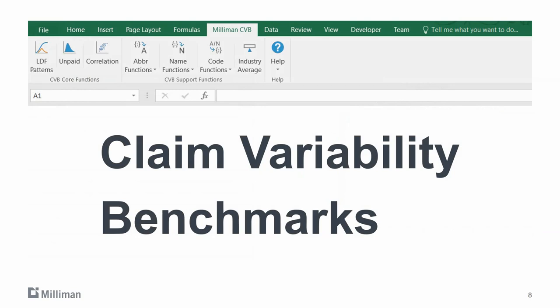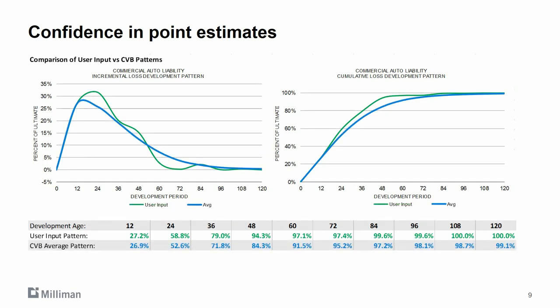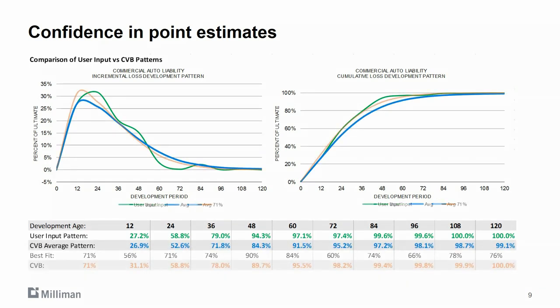To answer the second question about how it can benefit a user, it actually has multiple parts. Starting with loss development patterns, typical patterns are based on an average pattern, which may or may not provide a reasonable fit to your pattern. But since the Claim Variability Benchmark product is based on average patterns from thousands of data triangles, you can search for different percentiles to find a better pattern for your data. In this example, the 71st percentile has the best fit.